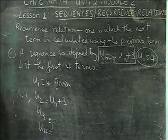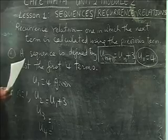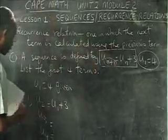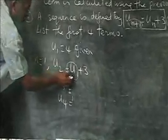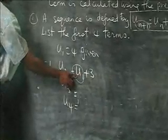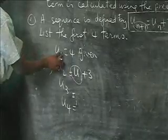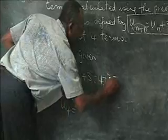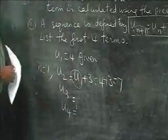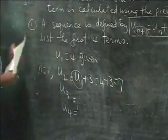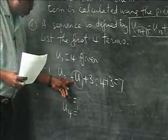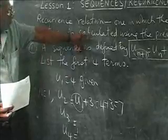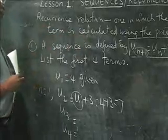Going back to the definition — one in which the next term is calculated using the previous term — we can see that u2 = u1 + 3 = 4 + 3 = 7. So we actually calculated u2 using the term we had before, which was u1. That's exactly what comes out of the definition.